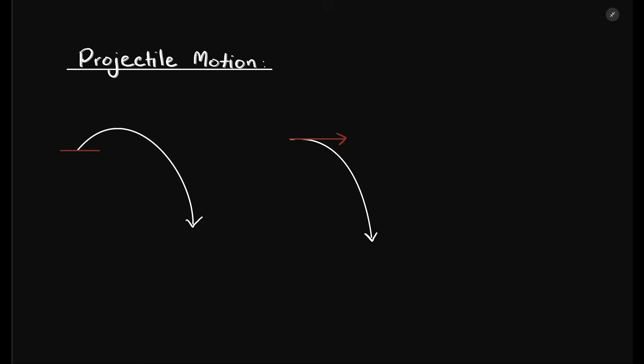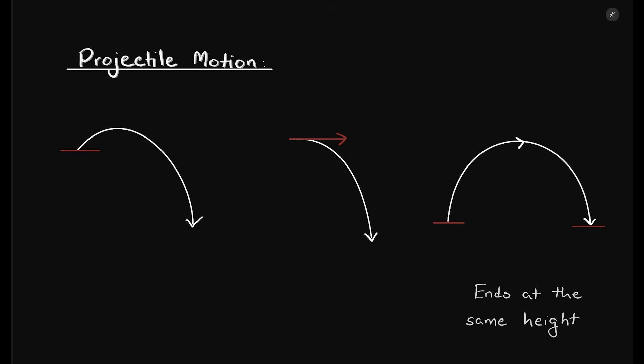Today we will be learning about projectile motion. I will go over three different question types that will cover 97% of the questions that come in your exams. On the right is the easiest one — the projectile starts and ends at the same height. On the middle one, the projectile is thrown straight. And on the left, we have the tougher ones that start from a different height and end at a different height. These three types are the fundamental of projectile motion questions.